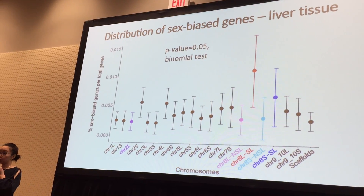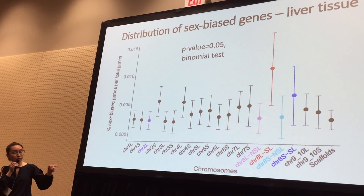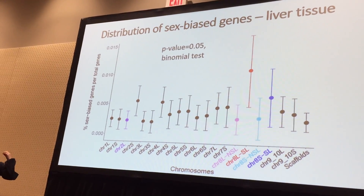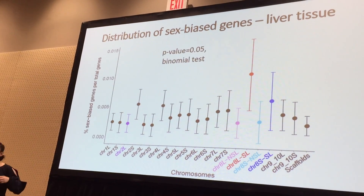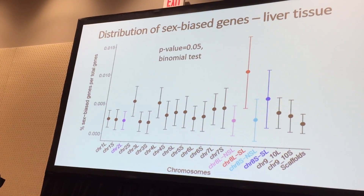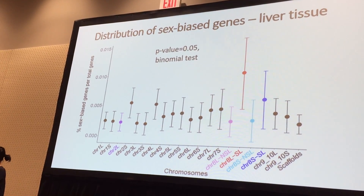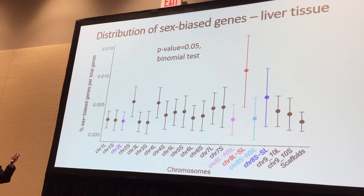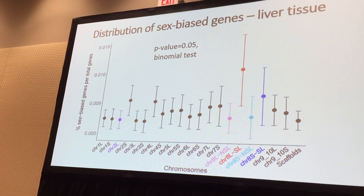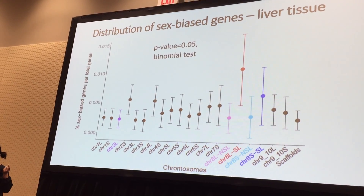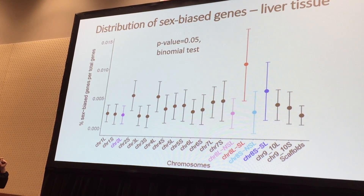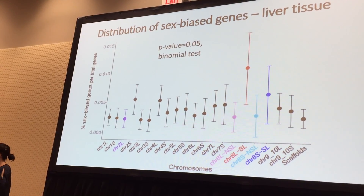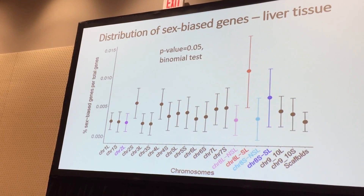The plot I'm showing here is for liver tissues. On the X-axis are the chromosomes, and I have divided sex chromosome 2AL into the sex-linked regions and the non-sex-linked regions, shown in red and pink respectively. On the Y-axis is the proportion of genes that are sex-biased in each region or chromosome. The error bars show 95% confidence intervals. The red dots, representing the sex-linked region of the sex chromosome, have a higher proportion of sex-biased genes compared to the non-sex-linked regions and also compared to the rest of the genome. A binomial test comparing the sex-linked region to the entire genome yielded a p-value of 0.05, indicating the difference is significant.